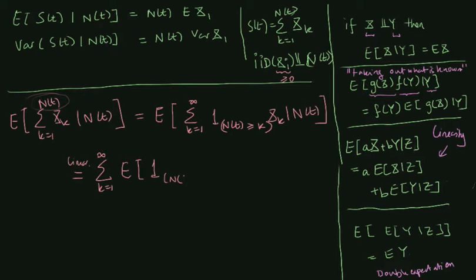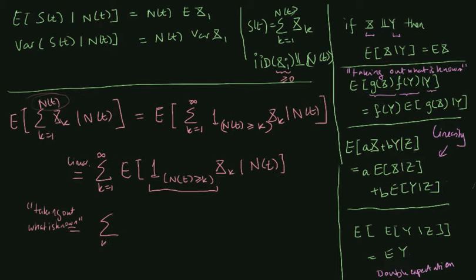Inside we have the conditional expectation of the indicator multiplied by X_k given N(t). The indicator is just a function of N(t), so since we have conditioned on N(t) we can use the rule called taking out what is known. Using this rule, we take the indicator out of the conditional expectation and plop it back up into the summation boundary — that is why we can take the sum together with N(t) outside of the conditional expectation.